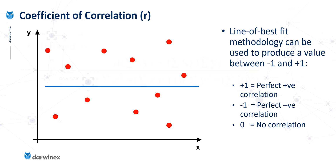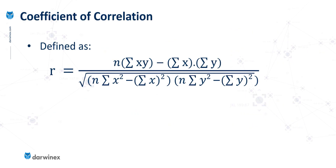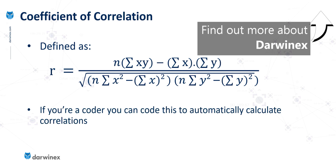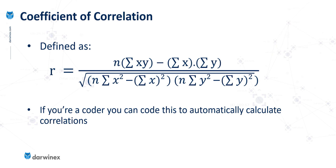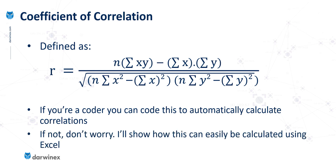The actual underlying calculation looks like this, but don't let this phase you. If you're a coder, you can certainly code this to automatically calculate correlations. However, if you're not, don't worry — I'll be showing you an easy way of calculating this in Excel, and that won't require any coding knowledge at all.